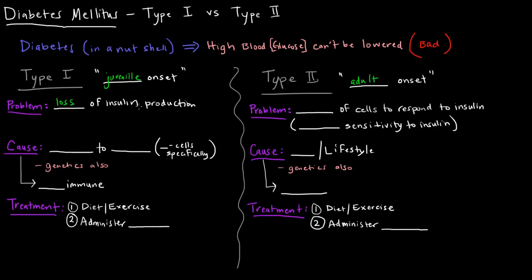Type 1 diabetics do not produce insulin. Type 2 diabetics have a different problem — they don't have a problem producing insulin, they can produce it, but they have an inability of the cells to respond to insulin. So they have a decreased sensitivity to insulin. Type 1 diabetics have no insulin; type 2 diabetics are insensitive to insulin, so their cells cannot respond to insulin even if it is there.